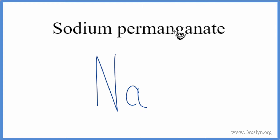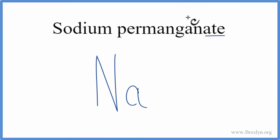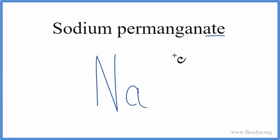For permanganate, that's not on the periodic table — it ends in A-T-E, so it's a polyatomic ion. You need to either have it memorized or look it up on a table of common polyatomic ions. The permanganate ion is MnO4 minus.